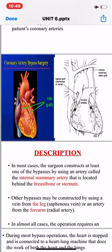In almost all cases, the operation requires an incision in the midline of the chest, which is called sternotomy. As you can see from the image, the arteries have been attached with the vein graft so that blood will supply to the particular part which has become damaged due to improper blood supply.